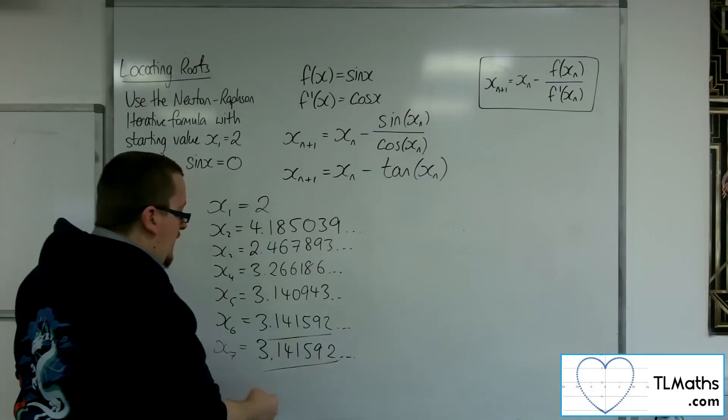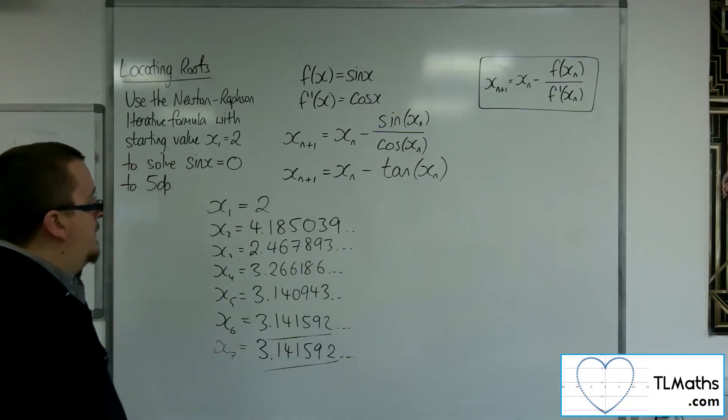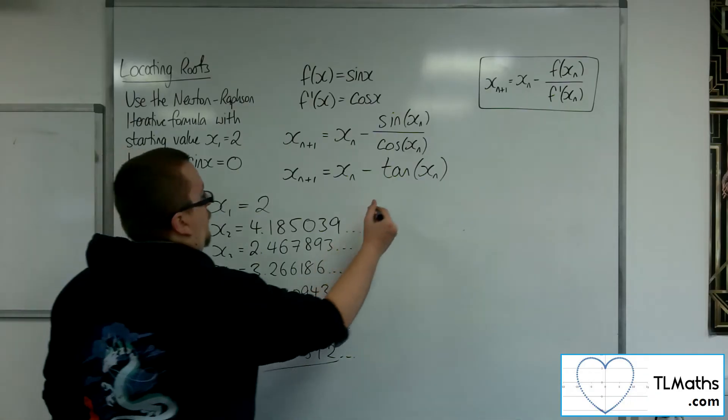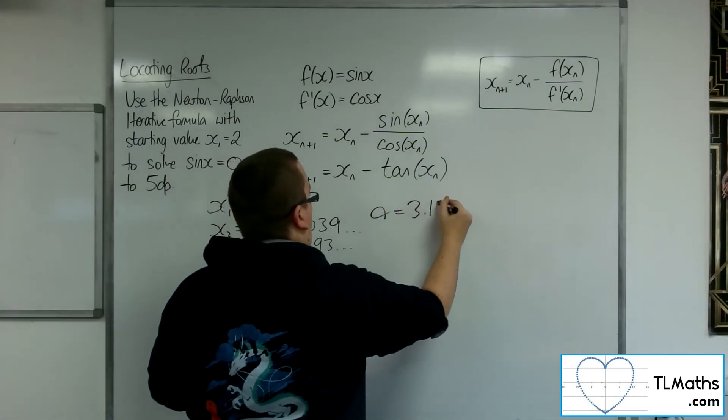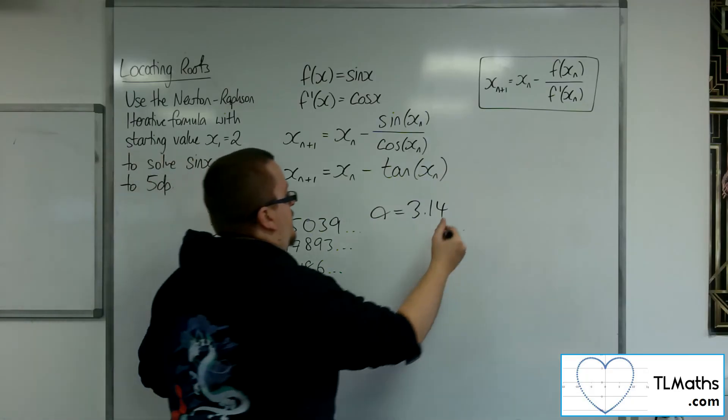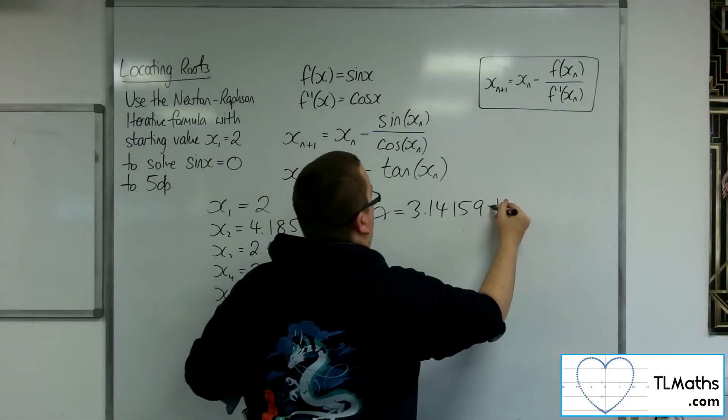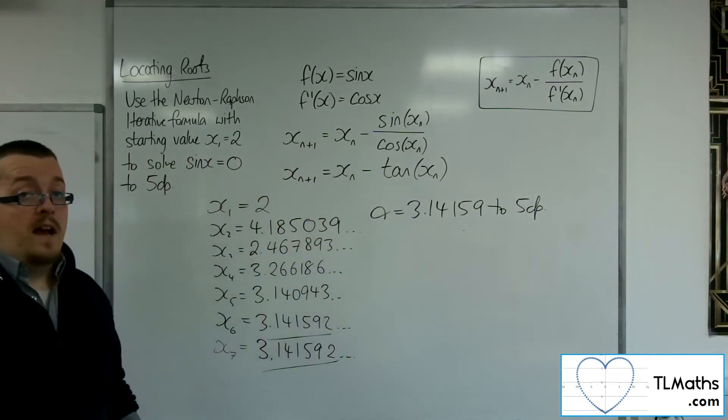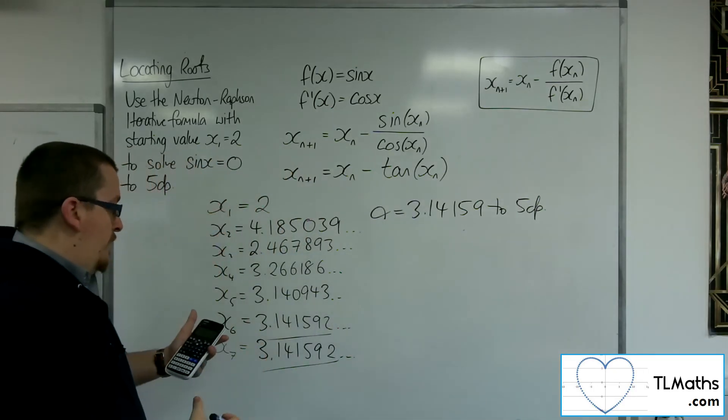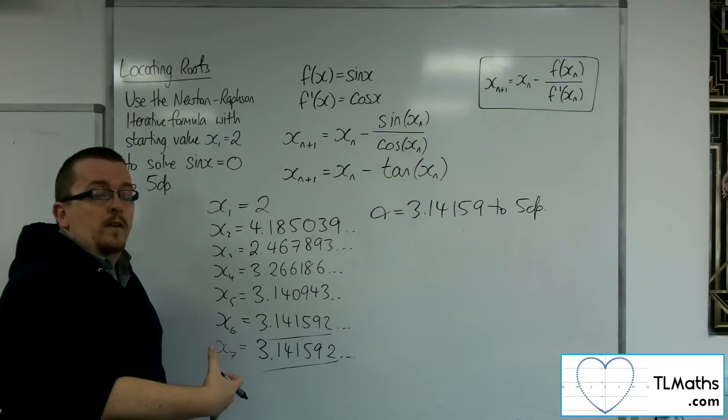OK, I have found that alpha is going to be 3.14159 to 5 decimal places as required. And we know, really, the calculator knew that alpha was pi.